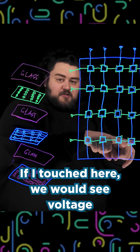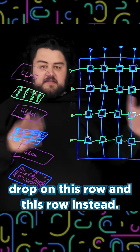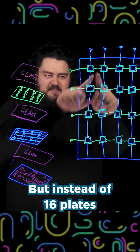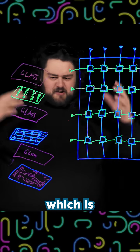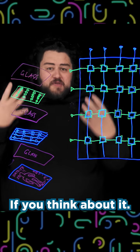If I touched here, we would see a voltage drop on this row and this row instead. And that is how your touchscreen works, but instead of 16 plates, you have millions of plates, and it's all transparent, which is really incredible if you think about it.